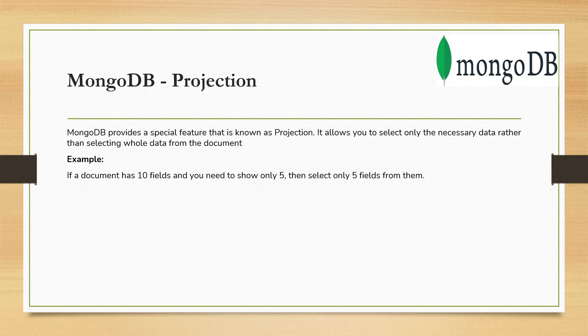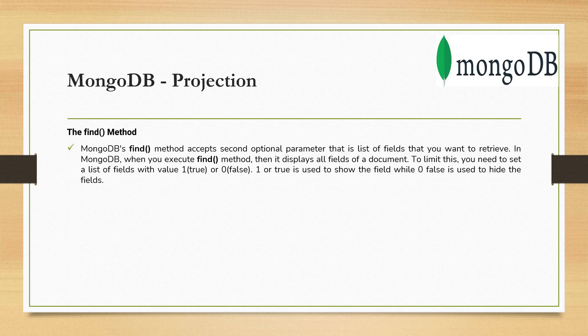In SQL, when you do SELECT * FROM table_name, it selects all the columns from the table. Similarly, when you issue the find command, it selects all the attributes from each document within the collection. But sometimes you need to be very selective — if you are interested in only two fields out of 200 fields, for example. This makes projection a kind of performance optimization as well.